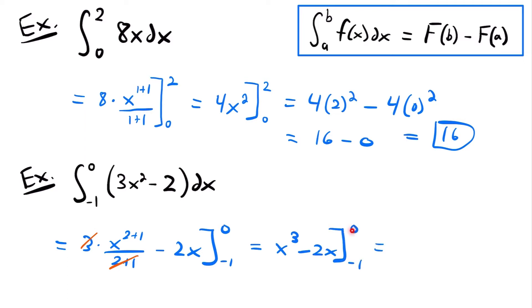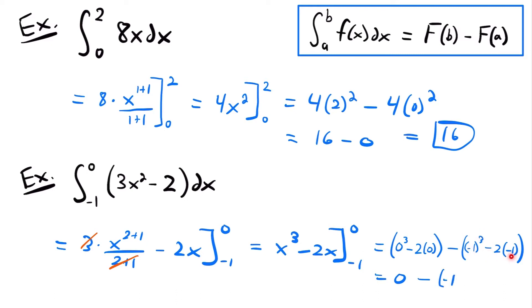If we evaluate this, we plug 0 into our antiderivative: 0 cubed minus 2 times 0. Then we subtract negative 1 plugged in: negative 1 cubed minus 2 times negative 1. 0 cubed is 0, minus 2 times 0 is 0, so the first part is 0. Then we have 0 minus negative 1 cubed, which is negative 1, and negative 2 times negative 1 is positive 2. So we have negative 1 plus 2, which is positive 1. With the negative sign applied, our answer is negative 1.